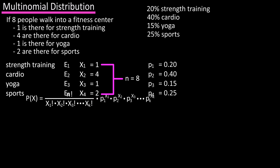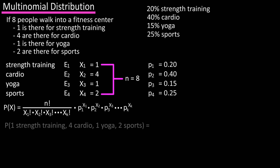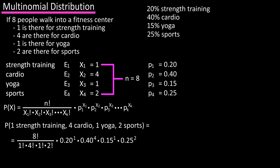Now we have all we need to plug and calculate. The probability of x equals 8! / (1! · 4! · 1! · 2!) · (0.20)^1 · (0.40)^4 · (0.15)^1 · (0.25)^2. Calculating this out, we get a probability of 0.040, or 4%.